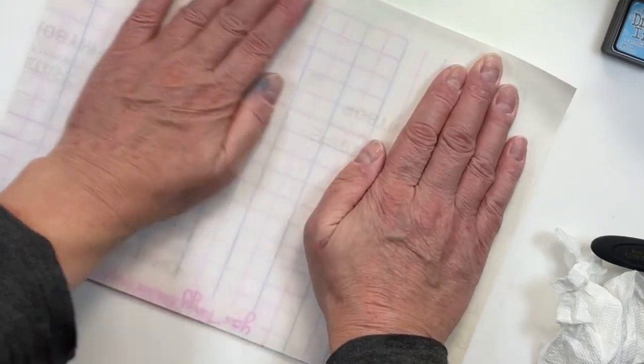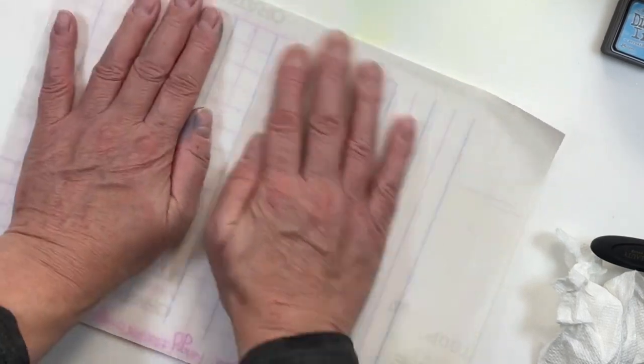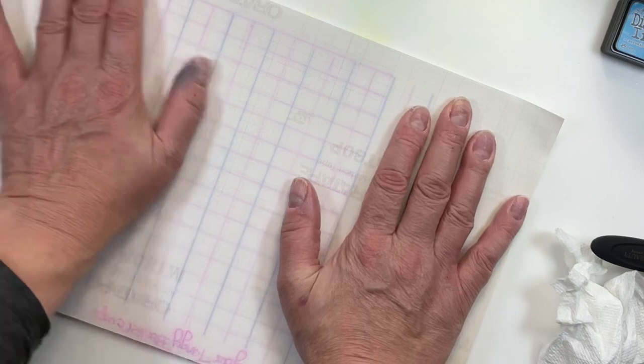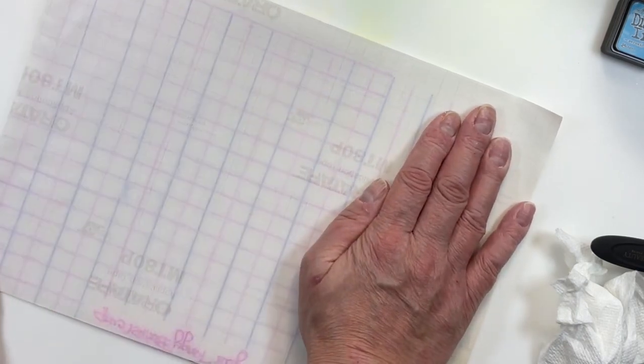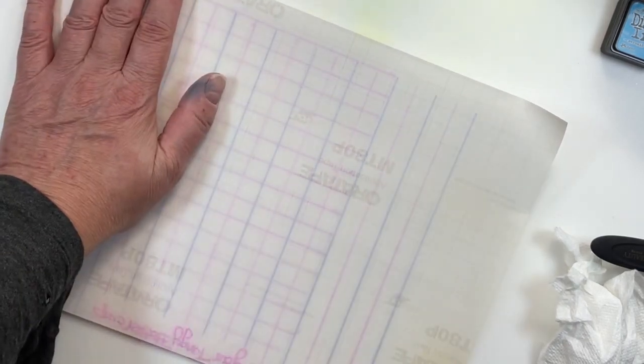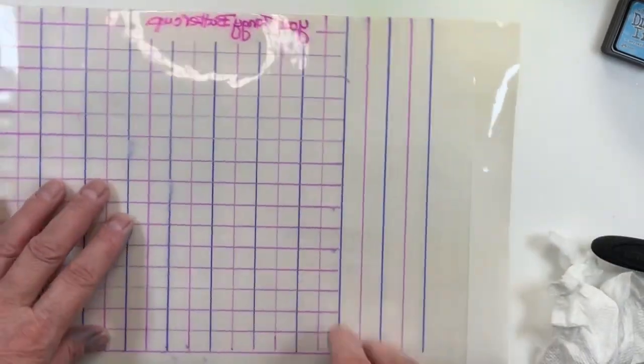I'm just smoothing it out with my hands. I will go over it and burnish it with something flat. That's going to give you all of the workability of the other mat and it's going to give you that protection. Cut this extra stuff off.